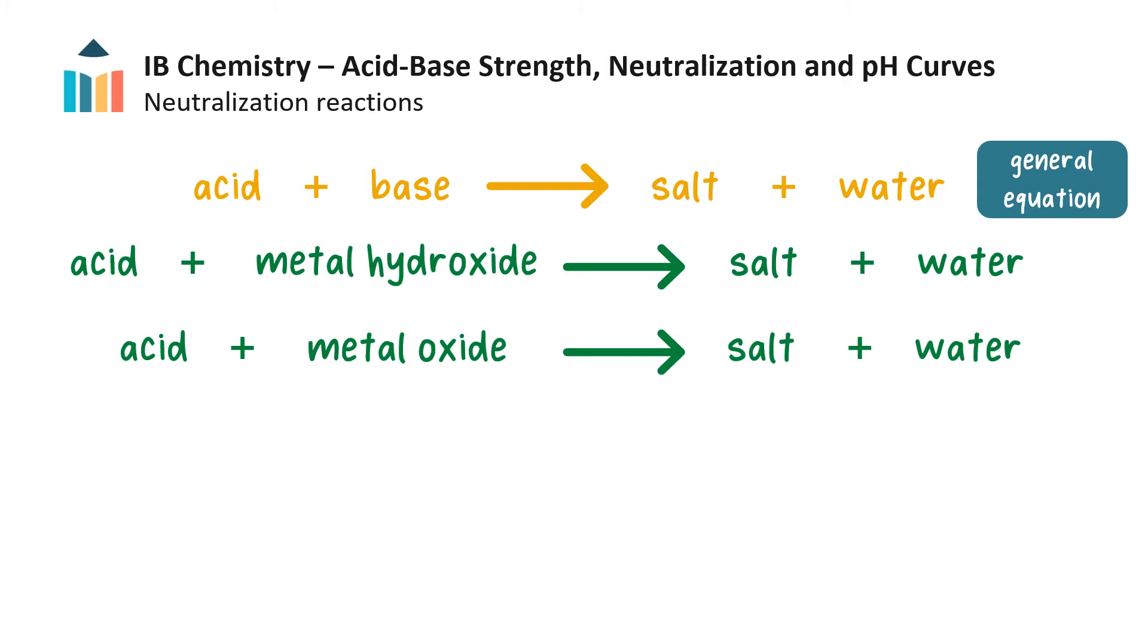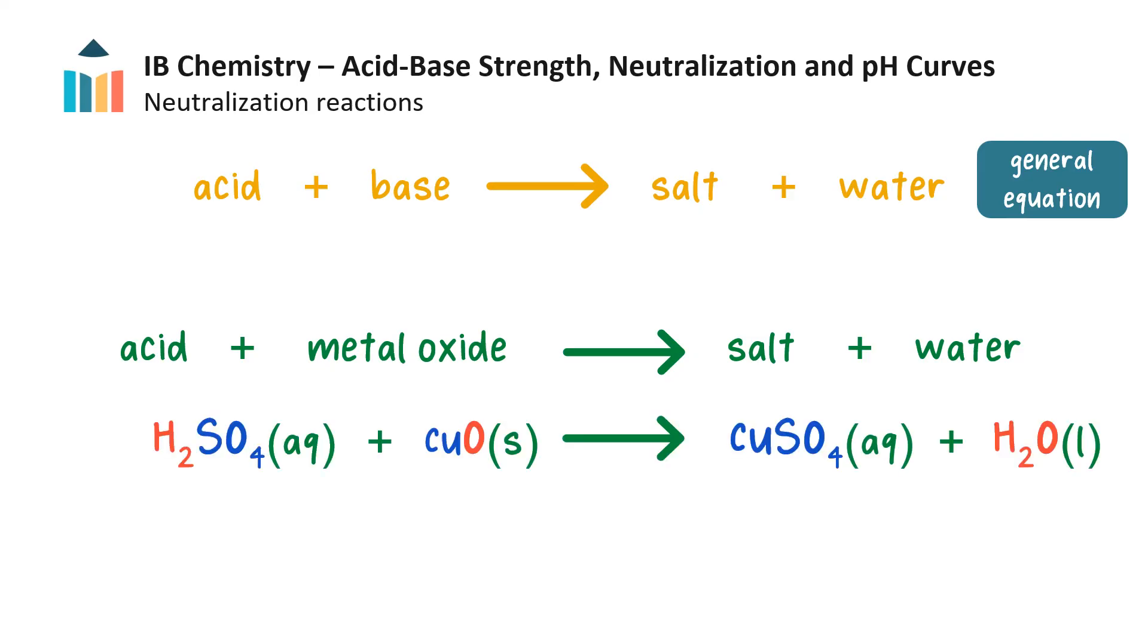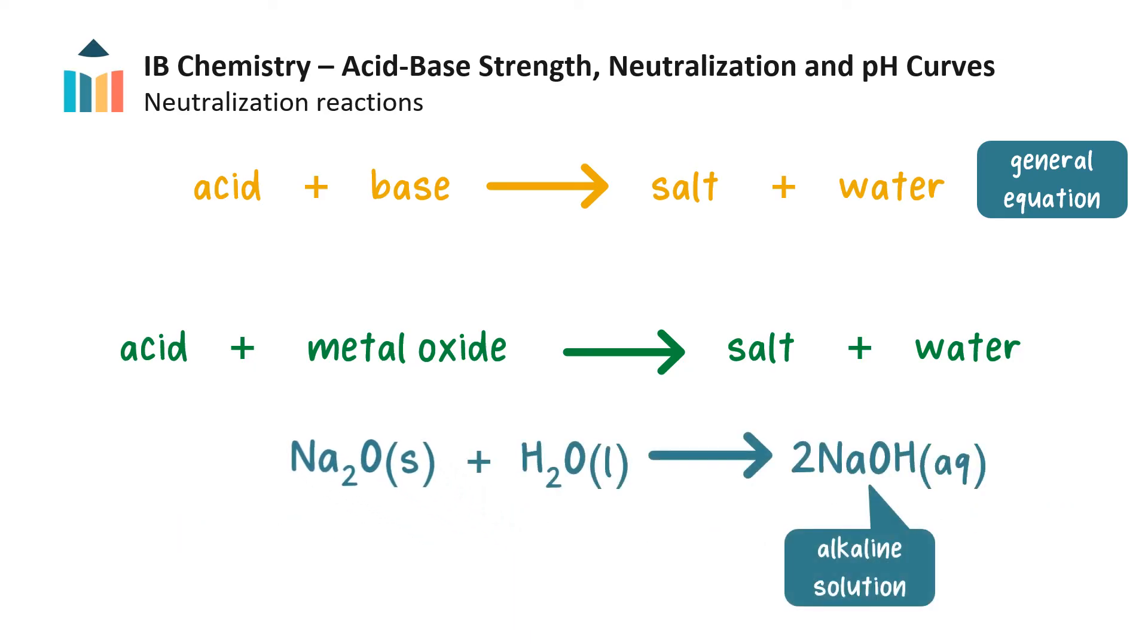The base in a neutralization reaction can also be a metal oxide. For example, when copper oxide reacts with sulfuric acid, the salt and water are still formed. Here is another example where the metal oxide is sodium oxide and the acid is hydrochloric acid. Note that the reason why we call metal oxides bases is that many of them react with water to form alkaline solutions. These solutions have a high pH and so these metal oxides must be basic.